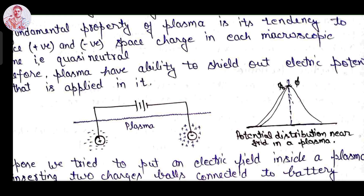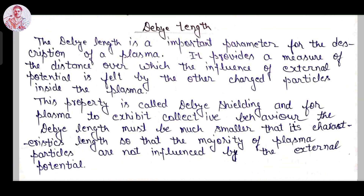The potential distribution near the grid in plasma can be shown from this graph. The Debye length is an important parameter for the description of plasma. It provides a measure of the distance over which the influence of an external potential is felt by the other charged particles inside the plasma. This property is known as Debye shielding, and for the plasma to exhibit collective behavior, the Debye length must be much smaller than the system size.